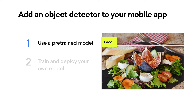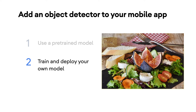The first approach is to use a pre-trained model that can detect general objects. For example, if you want to detect objects like home goods, food, or plants, using a pre-trained model is recommended, because you can use one off the shelf without spending time to train your own model.